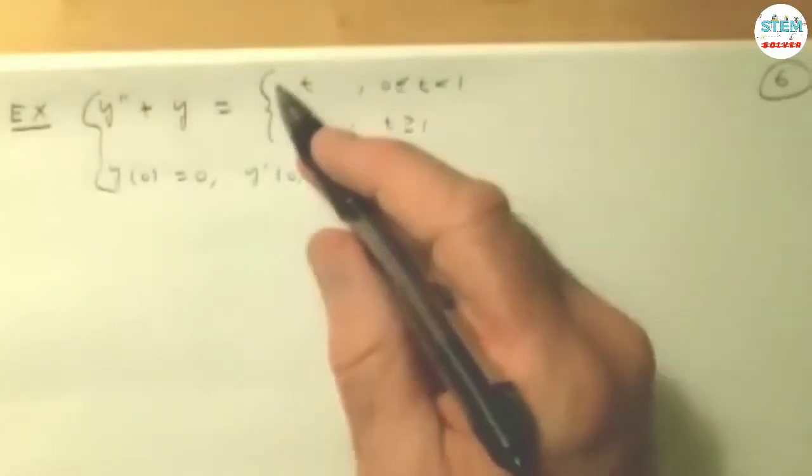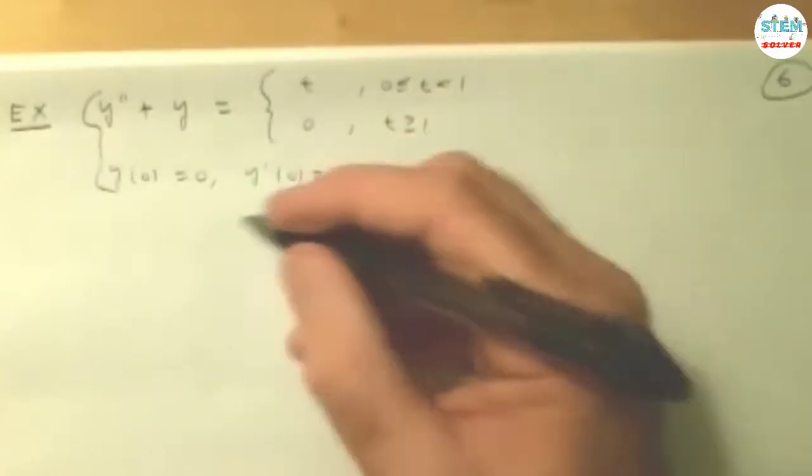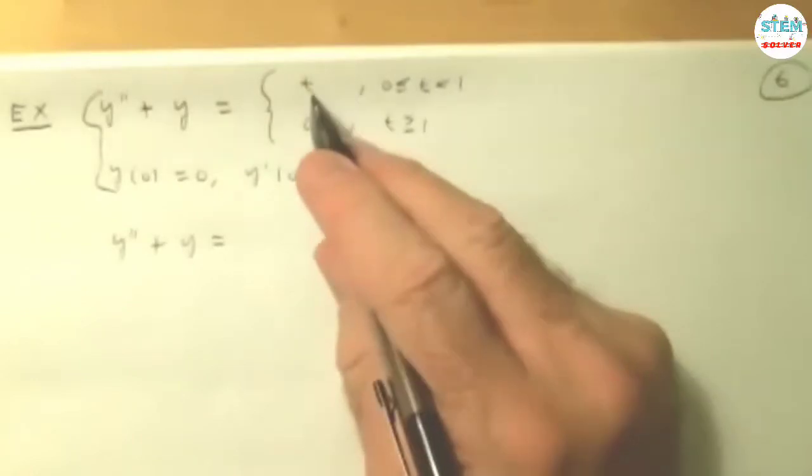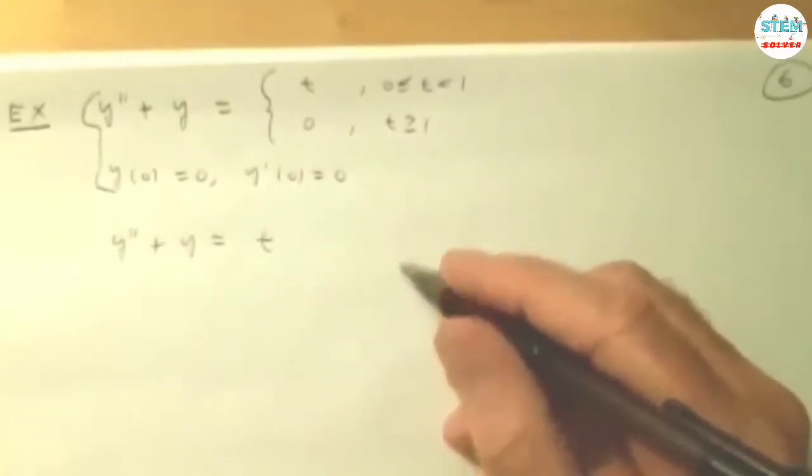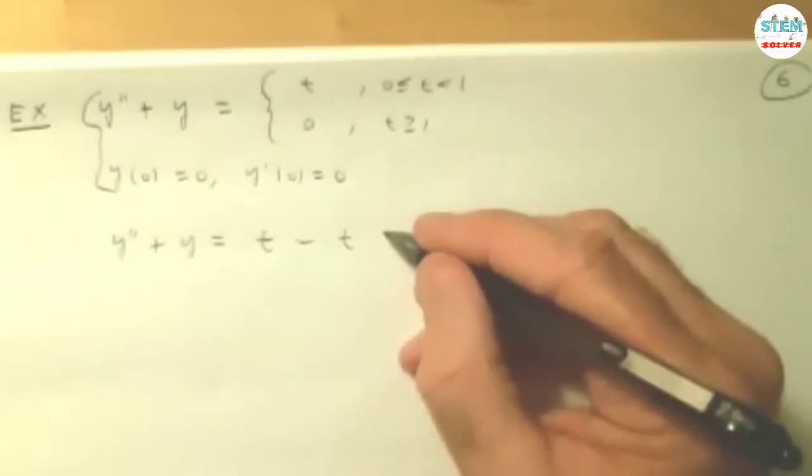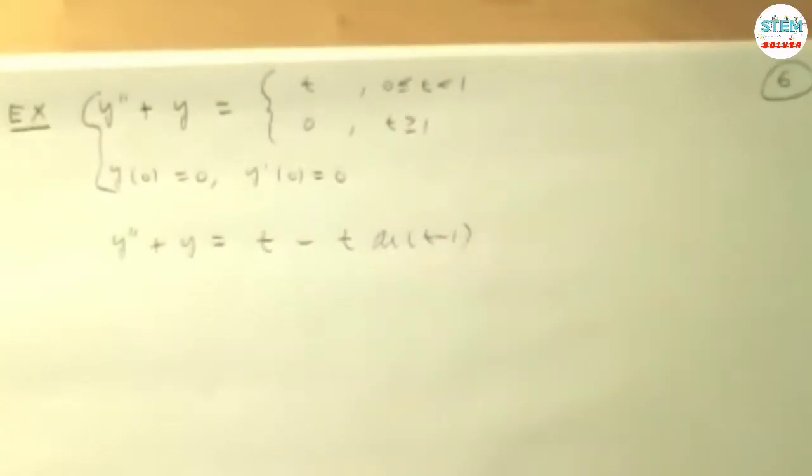First thing you want to do is deal with this side. Make it one line using a unit step function. So I'm going to rewrite the differential equation like this: You want it to start out being t, so we're going to have t. Then you want it to go away, so you want to subtract t. You want that to happen when t equals 1, so you're going to multiply by u of t minus 1.